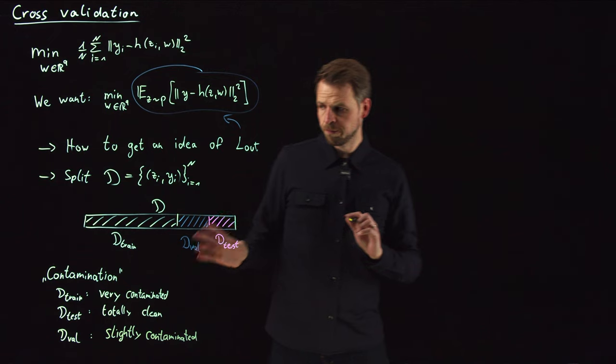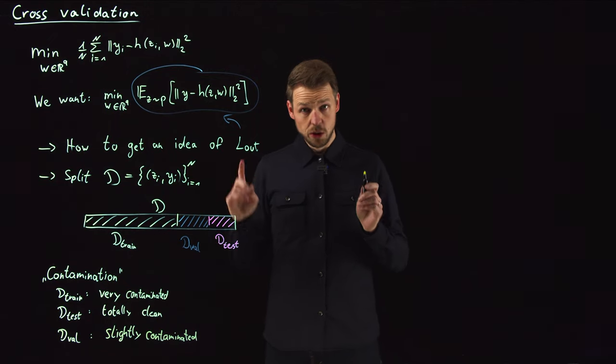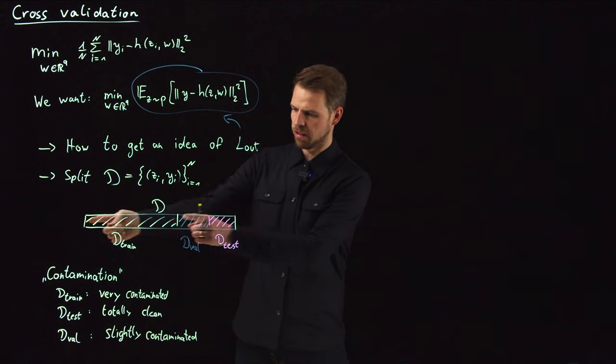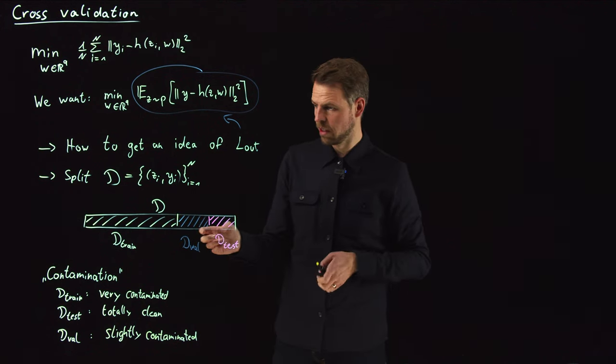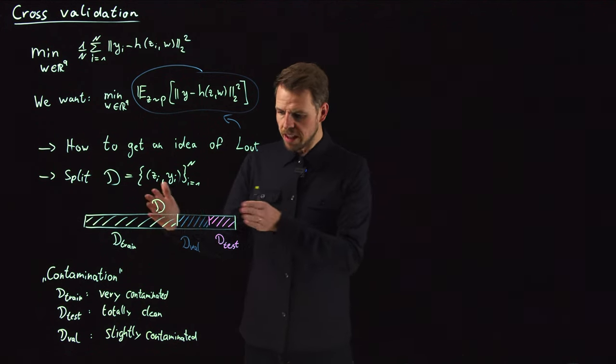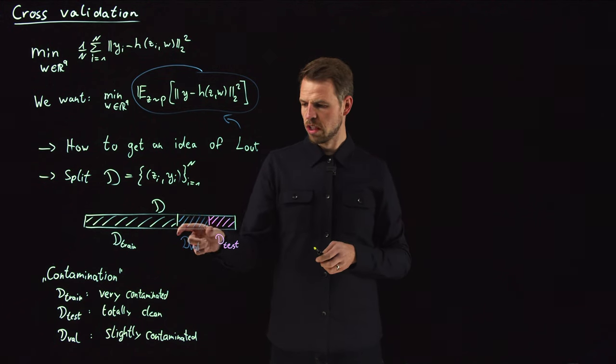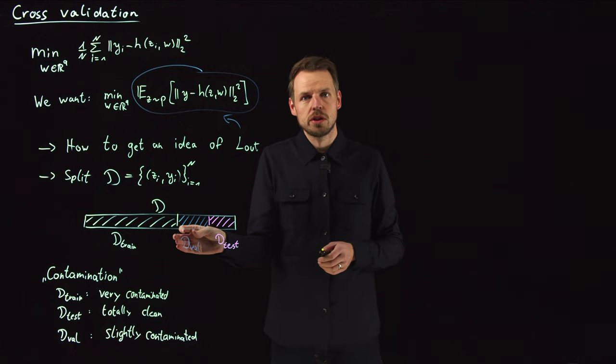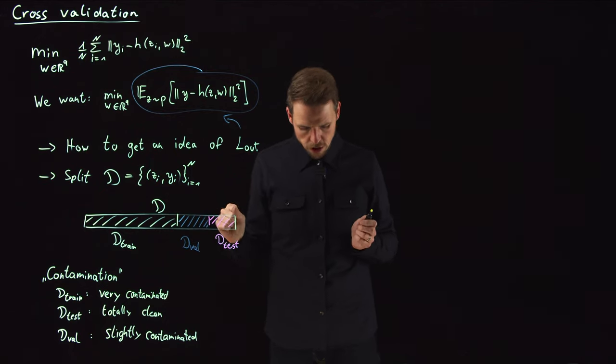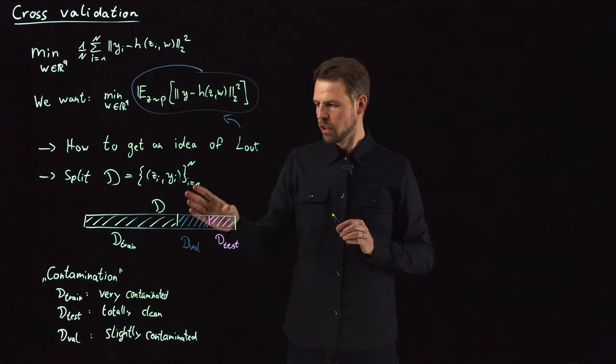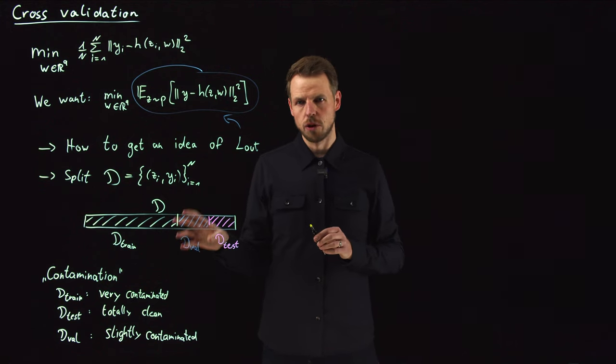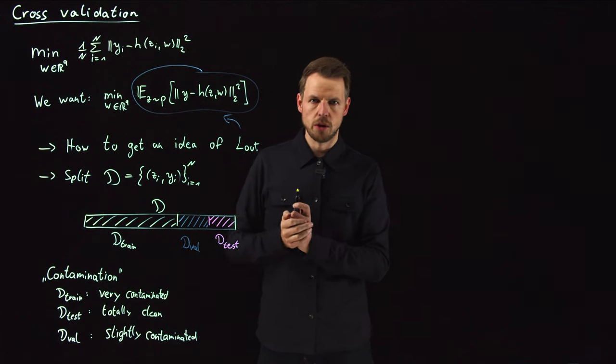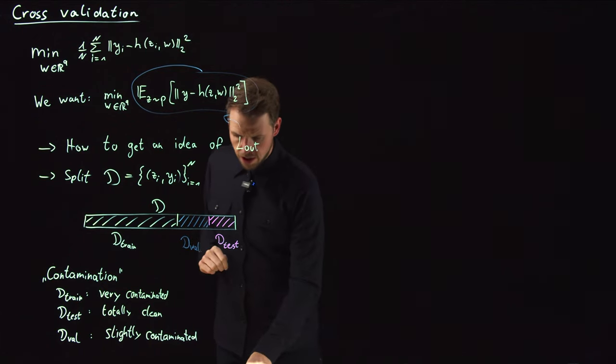So this will give us a very optimistic bias in terms of what the out-of-sample performance is. We have tailored the weights to exactly this data set. And then we have the test data set. This is totally clean. What I mean by this is what I said in the beginning. We are never ever going to use it for anything just after we have fixed any decision and trained the model and have a final model. Can we use this one to give an estimate of what the out-of-sample performance is and how well the model generalizes? And then we have this in between, the validation data set.